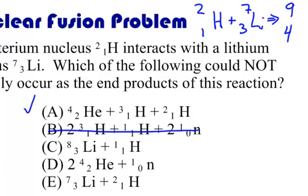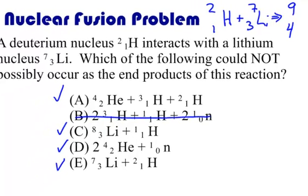If you look at C, we have a nine at the top, eight plus one. We have a four on the bottom, three plus one. And of course, D is going to work as well. We have two times four, that's eight, plus one, that's nine. Two times two, that's four. So, that works. And E, of course, will work as well. We have nine at the top, four down the bottom. And so, the answer, of course, for this one would be B. That's a nuclear fusion problem.